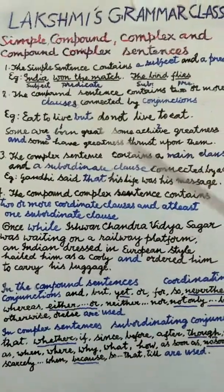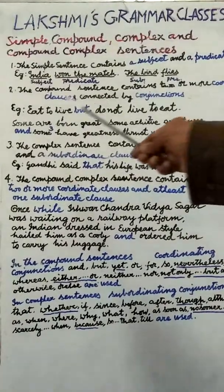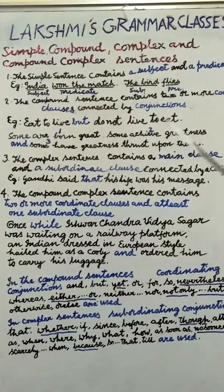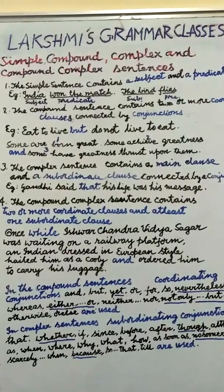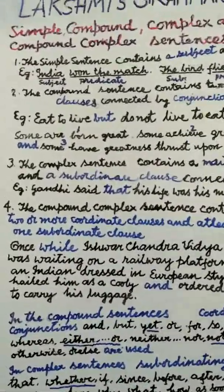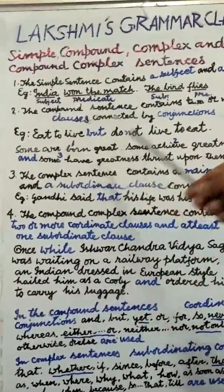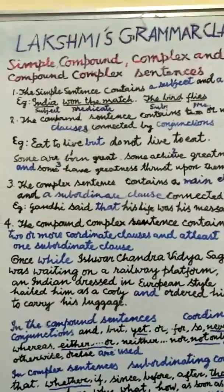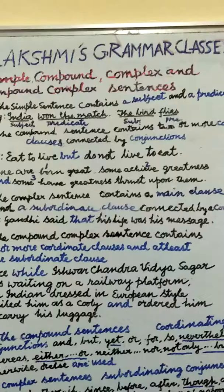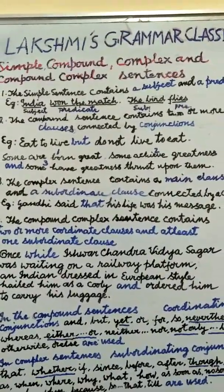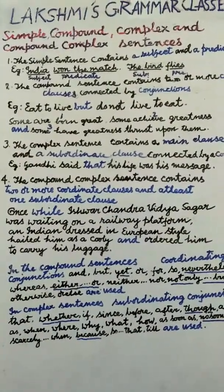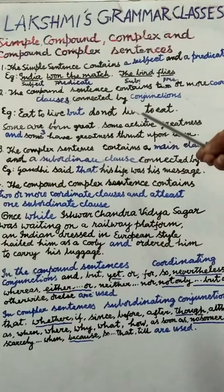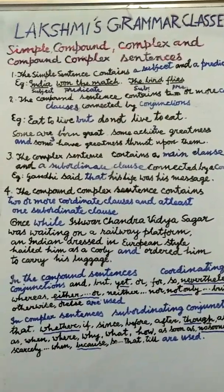Look at the second example. Here there are three coordinate clauses: 'Some are born great' is the first clause; 'Some achieve greatness' is the second clause; 'Some have greatness thrust upon them' is the third clause. All three are coordinate clauses connected by the conjunction 'and'. In the first clause, 'and' is understood.